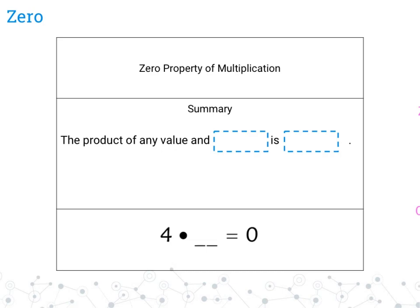The zero property of multiplication says the product of any value and 0 is going to be 0. For example, 4 times 0 is 0 — anything multiplied by 0 is 0. This brings us to the end of the properties of real numbers. Let's go ahead and take a look at the properties of equality now.